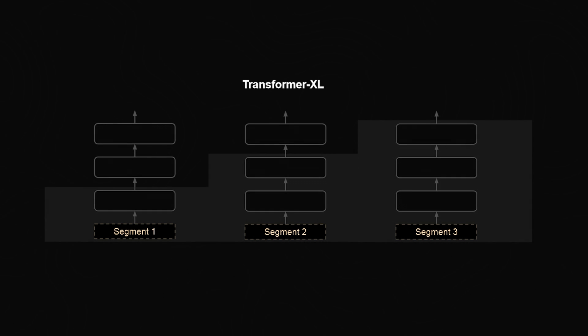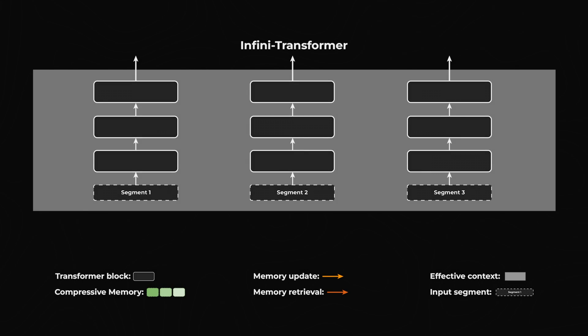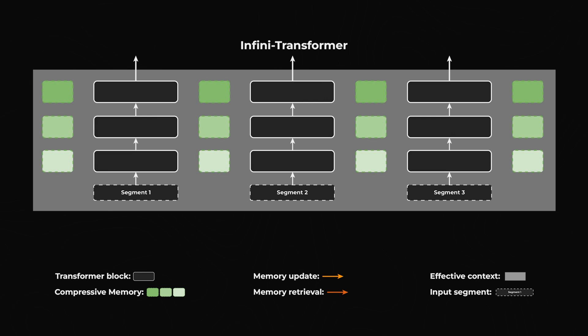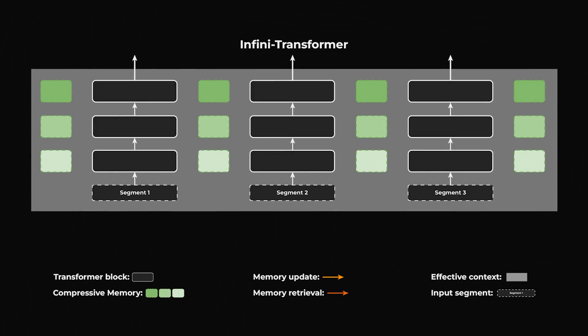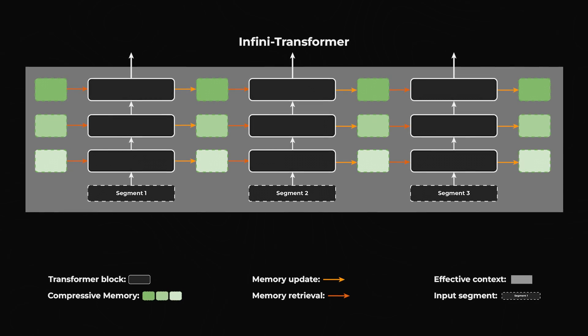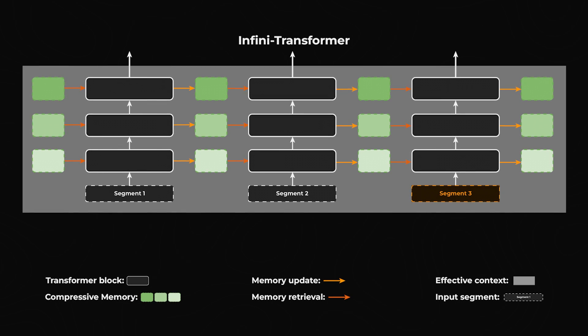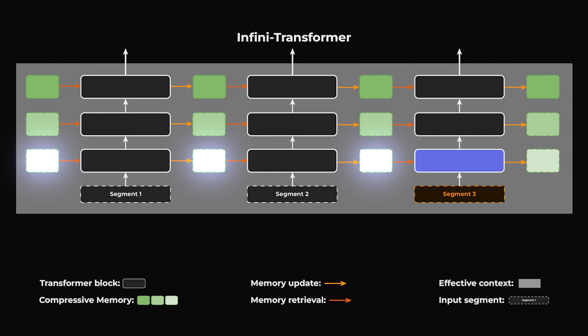Initially, Infini-Attention processes text in segments rather than the entire context simultaneously, calculating local information within these individual segments. Beyond merely processing individual segments, the model compresses information from past segments into a memory state, readily accessible for future needs. This method enables the efficient integration of long-range contexts into each local calculation, significantly enhancing scalability and density of data processing. Instead of continually recalculating the relevance of older data every time new input is processed, the model efficiently stores information in compressed form. When context from past segments becomes relevant again, the model can quickly retrieve it from the compressed memory state. When the model processes a new segment of text, it does not start from scratch — it retrieves relevant information from the compressive memory state based on current input queries, pulling the most pertinent historical data to the forefront.